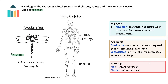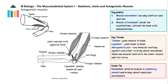Endoskeletons, on the other hand, are internal frameworks found in vertebrates including humans. These frameworks consist of bones interspersed with cartilage, and the muscles attached to them contract to produce movement. Now let's have a look at the muscles.